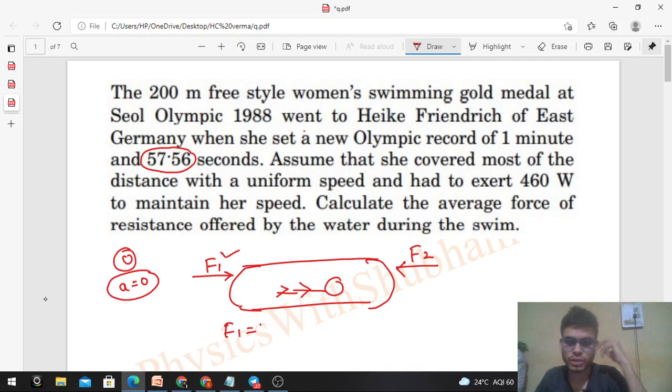This means the force of resistance is equal to the force which the swimmer has applied on the water. So F1 is equal to F2. The force the swimmer applied on water is the same as the force of resistance.